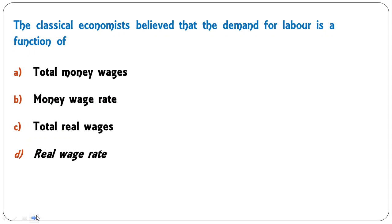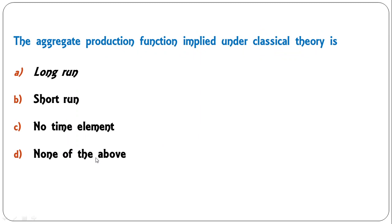Next question: classical economists believe that the demand for labor is a function of total money wages, money wage rate, total real wages, or real wage rate? It is the real wage rate on which demand for labor depends under classical theory. D is the correct answer.